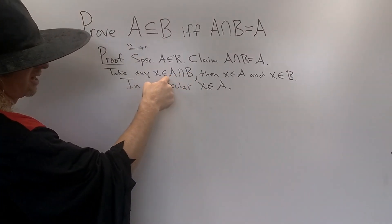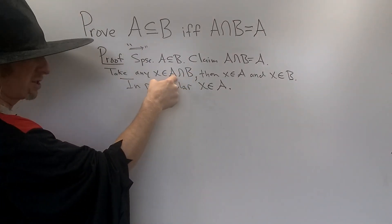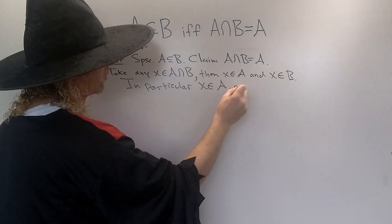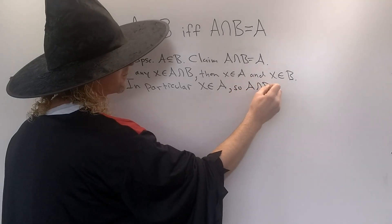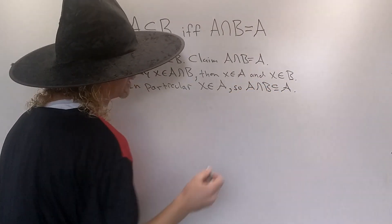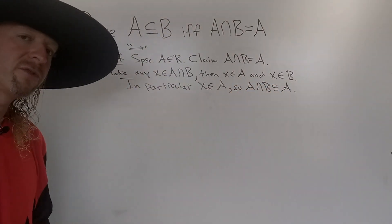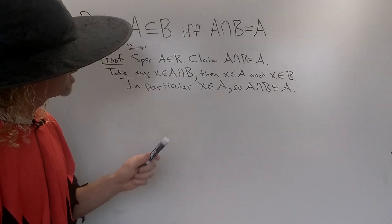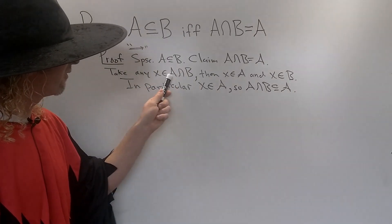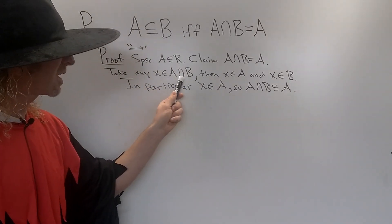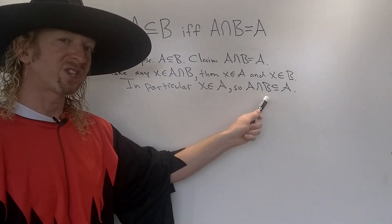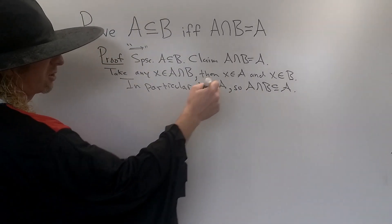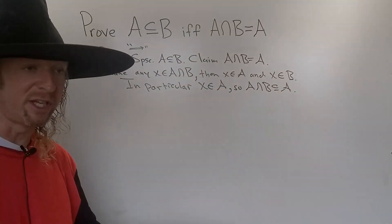We started with x in the intersection and showed it was in A. This shows that the intersection is contained in A — that is, A ∩ B ⊆ A. We took an element in the intersection and showed it's in A, therefore every element in the intersection is also in A, so the intersection is contained in A. Now let's go the other way.